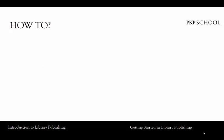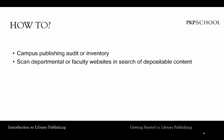The next thing we're going to talk about is how to go about conducting an environmental scan. Libraries can begin by undertaking a campus publishing audit or inventory to locate potential partners who already publish or would like to publish scholarly work. You can also scan departmental or faculty websites or CVs in search of depositable content. This may turn up an array of self-published journals, white papers, as well as other content.